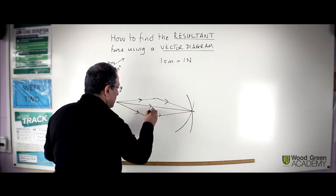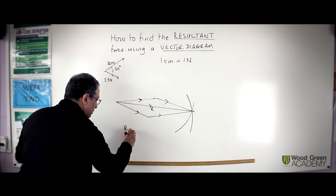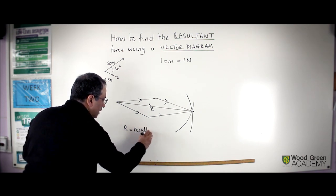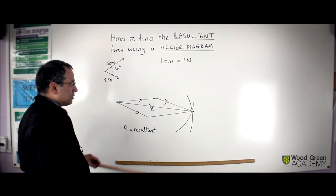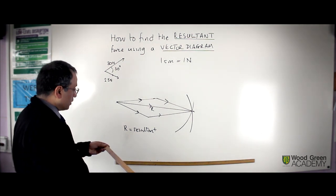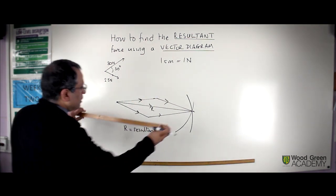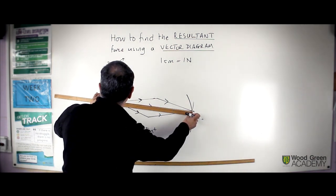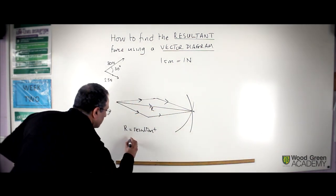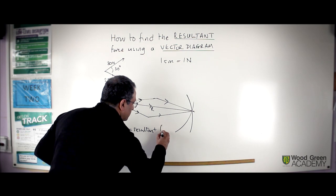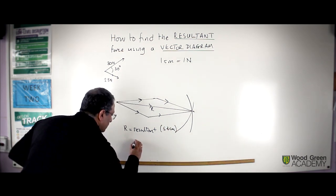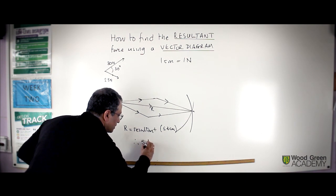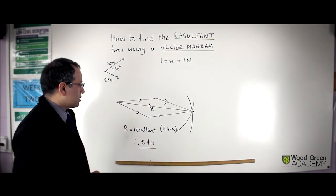Let's label that R. R is equal to the resultant. And because we have a scale, we can actually measure the size of the resultant. We've said that 1 cm is 1 N. And this is 54 cm. It's 54 cm. Using the scale. Therefore, this must be the resultant is 54 N.